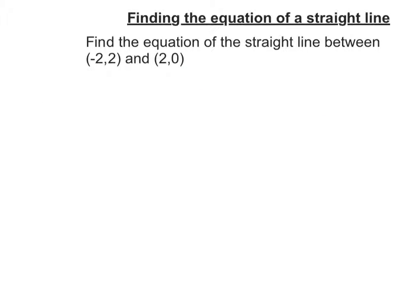Here's this second example with the points negative 2, 2 and 2, 0. So I've got my line y equals mx plus c, so I've got to find the m and the c. So m, start with, so remember that's y2 minus y1 over x2 minus x1.